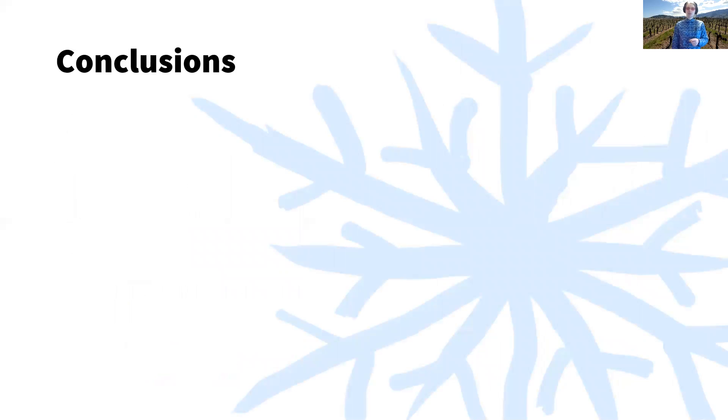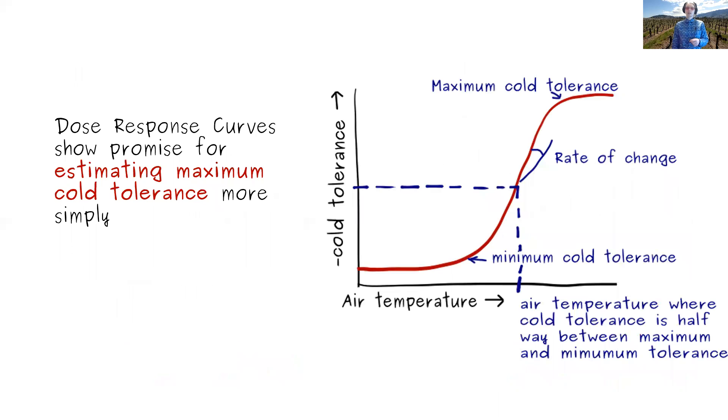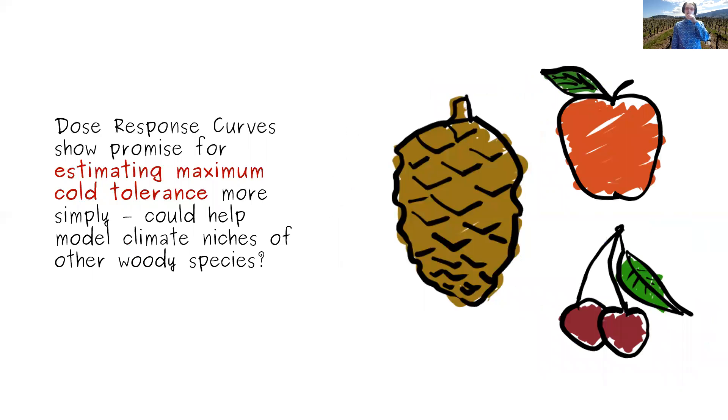So to conclude, dose response models do show promise as a simple and less data hungry method for predicting maximum cold tolerance. And they could perhaps be used to help define climactic envelopes for other species. And this would help us make better agricultural decisions and also potentially model wild species niches, depending on whether we put grower decisions or dispersal into our species distribution equation.